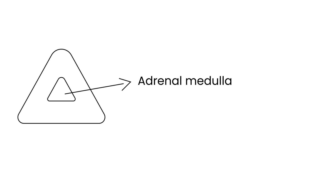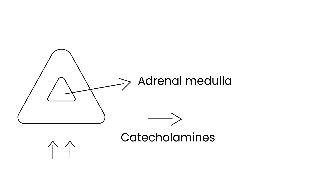This is an endocrine gland. What's important about this is that the adrenal medulla secretes catecholamines. If there's a tumor, those catecholamines will be elevated in the bloodstream. The two catecholamines are epinephrine and norepinephrine.